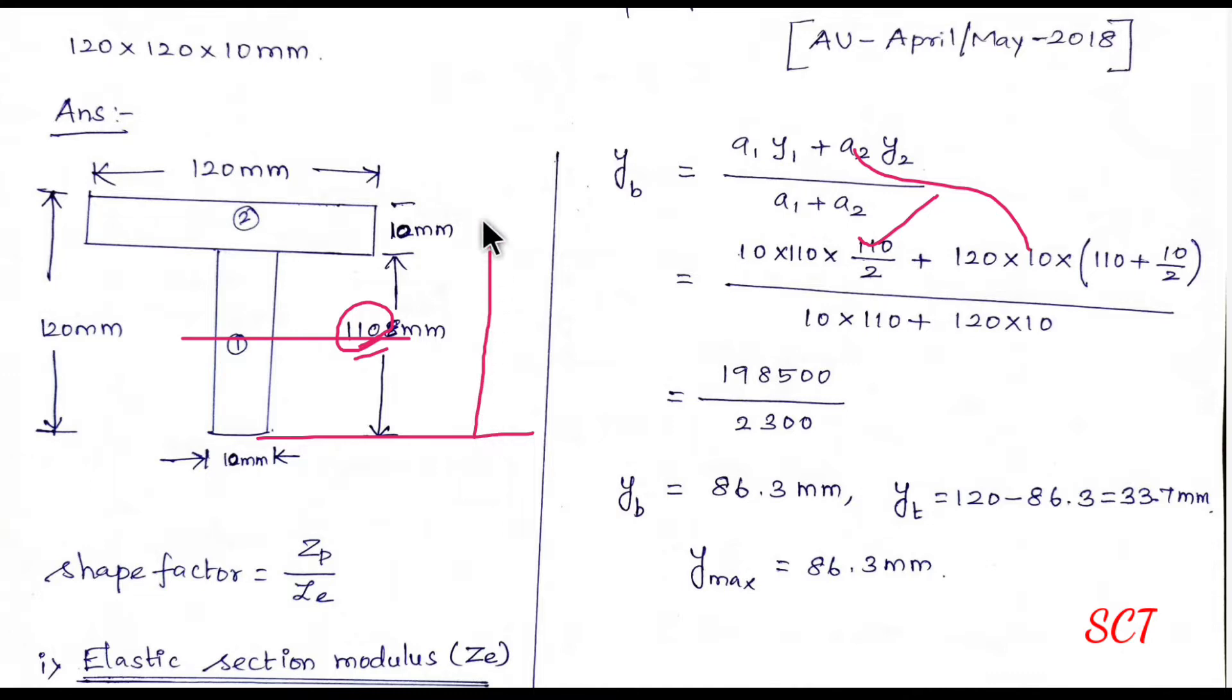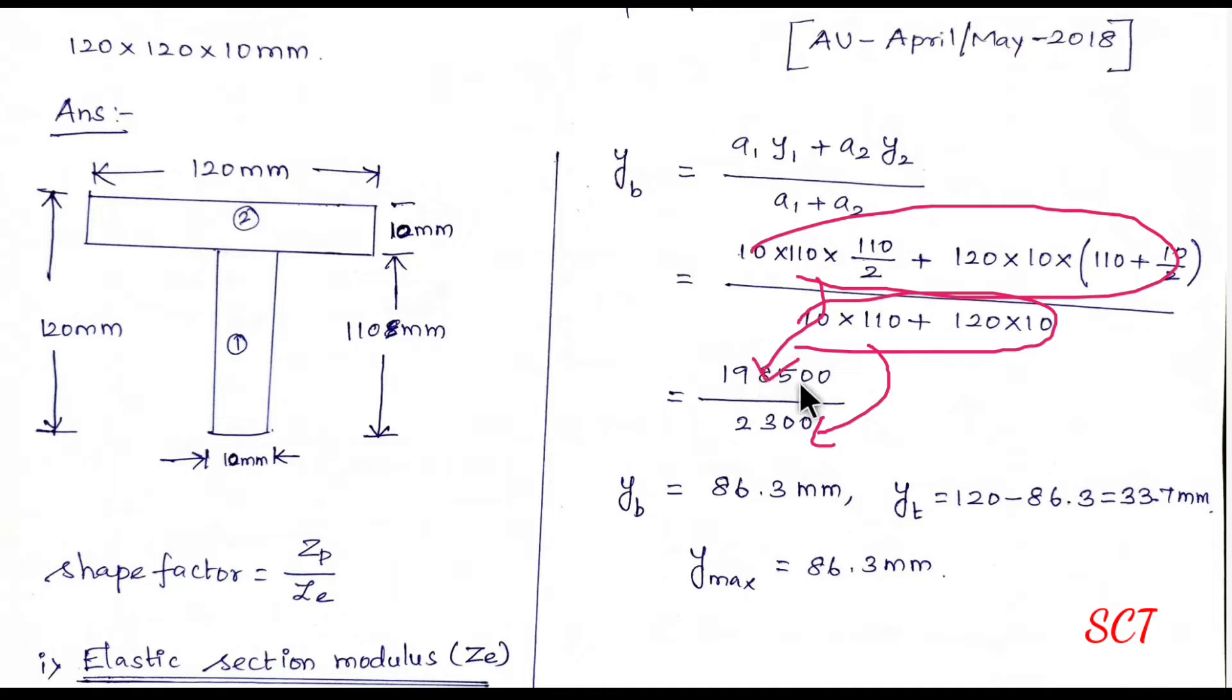If we look at Y2 from the bottom, let's look at 110. So we will put 110 right here. So just 110 plus 10, 110 plus 10. Substitute. So we will put A1, here we will put A2. Then YB is 86.3 mm.